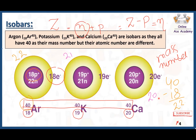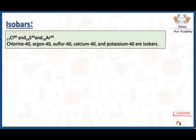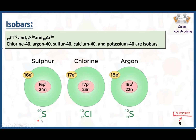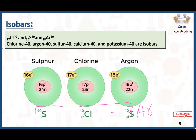Another example: chlorine, sulfur and argon are all isobars because they have different atomic numbers but their mass number is the same. In sulfur the atomic number is 16, in chlorine it is 17, and in argon it is 18. The atomic numbers of all three are different, but the mass number of sulfur, chlorine and argon is the same. This is what isobars are — same mass number but different atomic number.